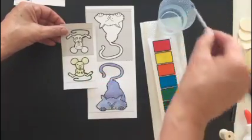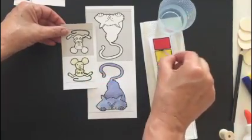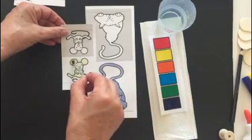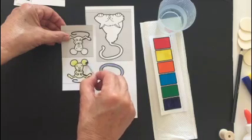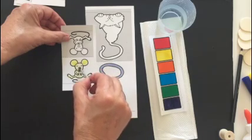And then take a little more paint and do maybe the ears if you want to make them a little darker like that, and the nose.